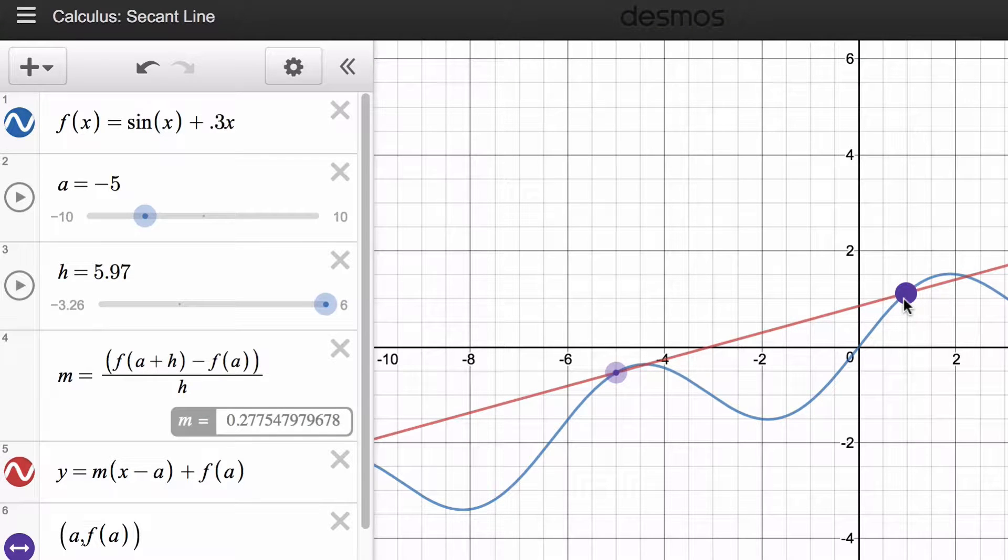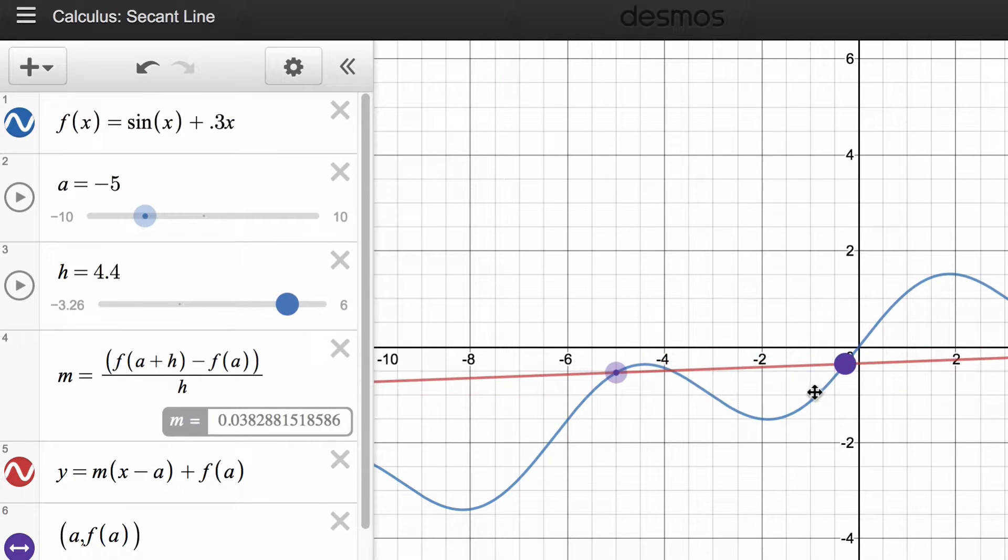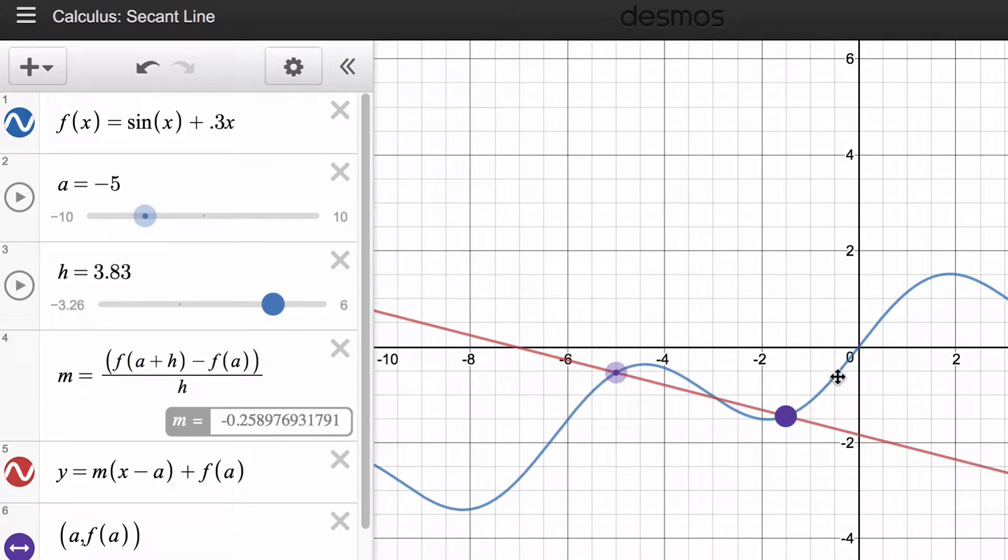Hi, in this video I'd like to show you interactively in Desmos how average rate of change, or a line that passes through the function at two different points, becomes instantaneous rate of change. What does it mean when we define instantaneous rate of change or derivative as limit as h goes to zero? You may be wondering why does it have to go to zero, and why? Let's take a look.